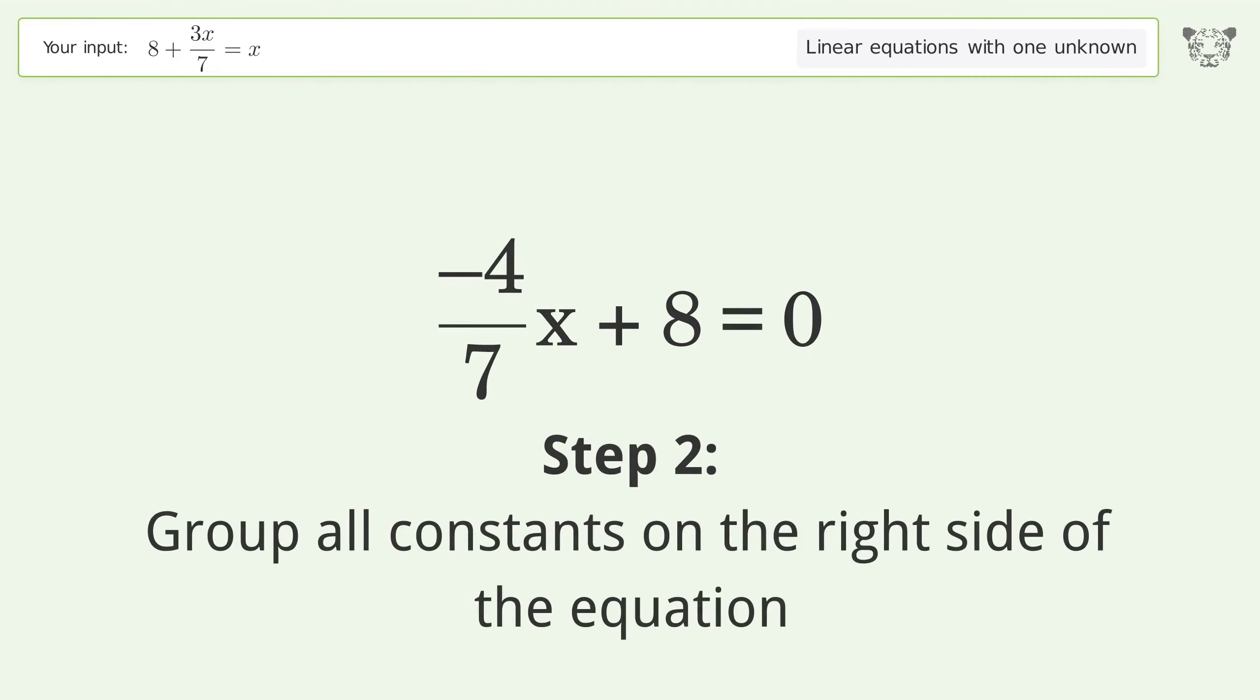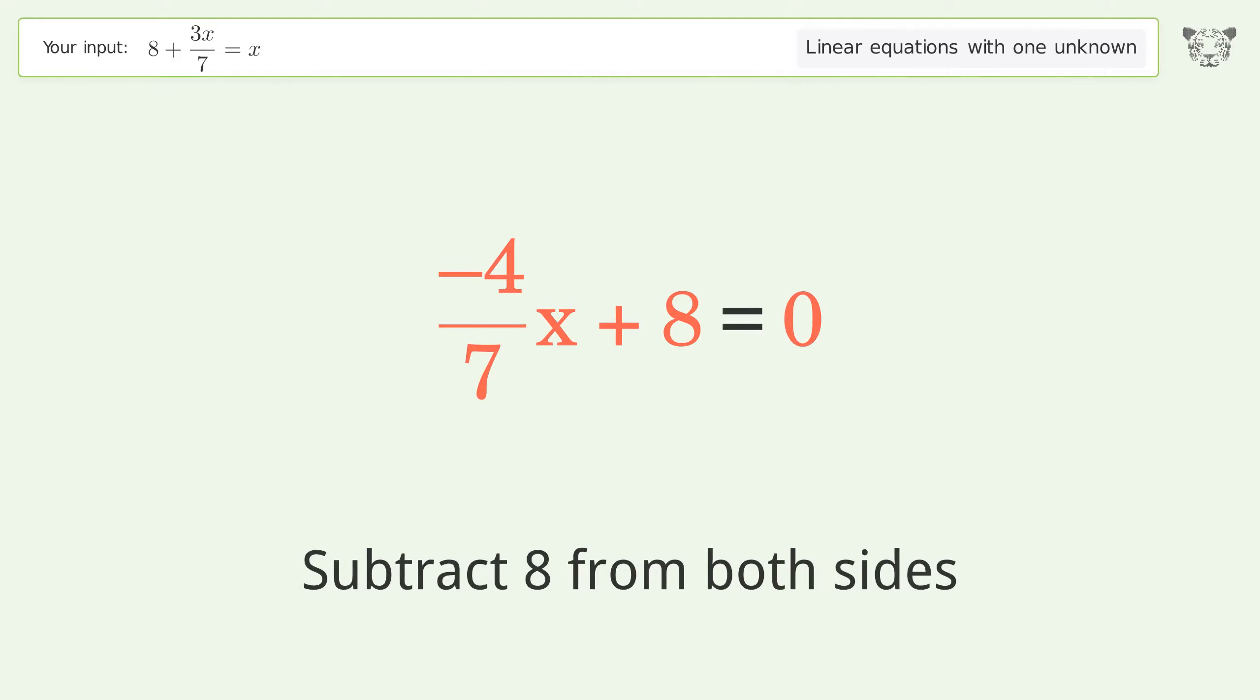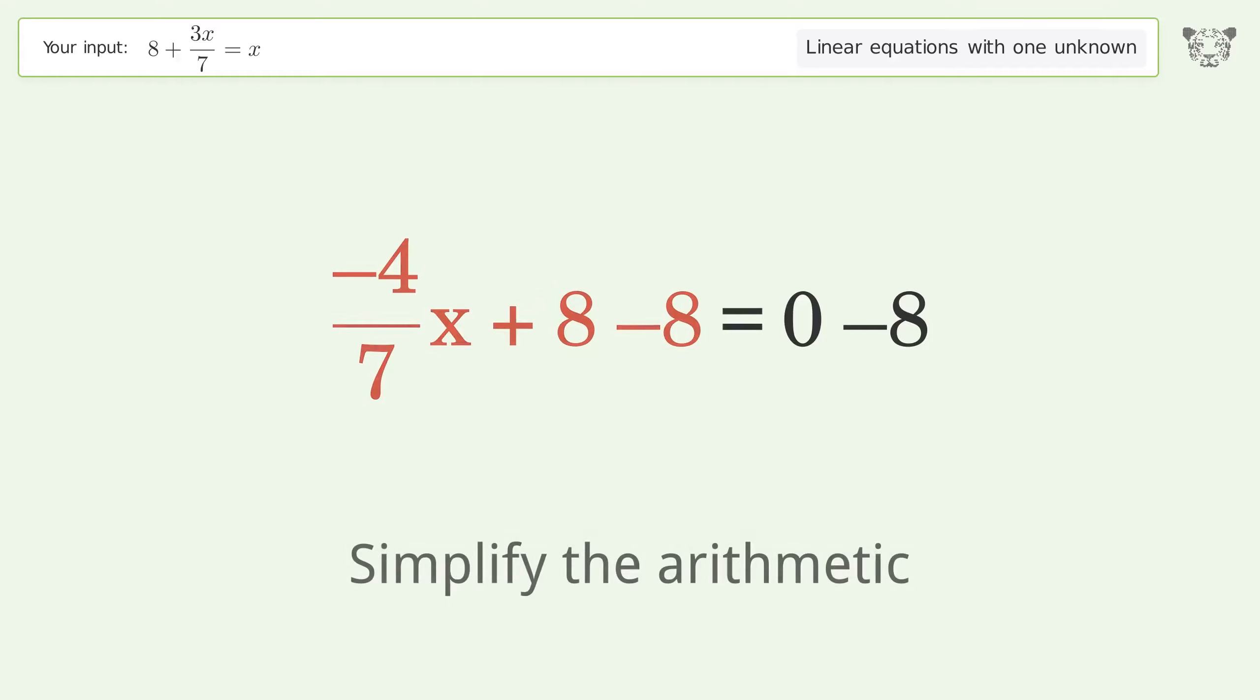Group all constants on the right side of the equation. Subtract 8 from both sides. Simplify the arithmetic.